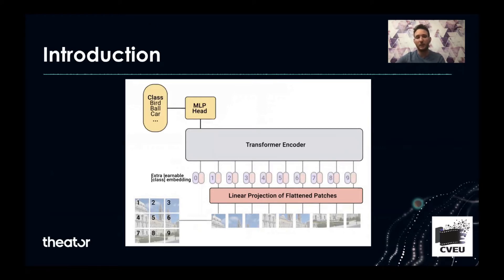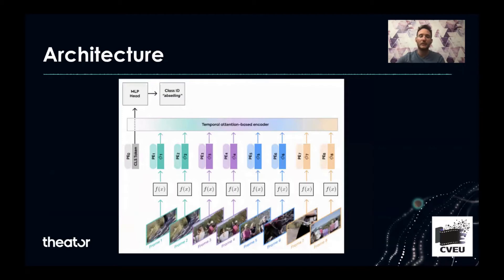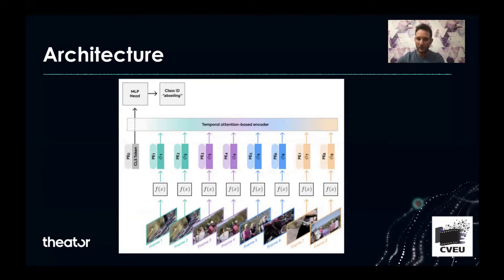In this paper, we present an architecture that is practically a framework consisting of two parts. The first part is the spatial backbone, and the second one is the temporal attention-based encoder for doing video action recognition on a full video.